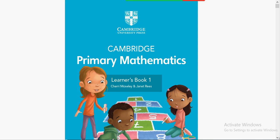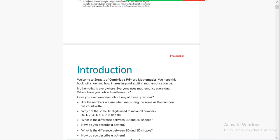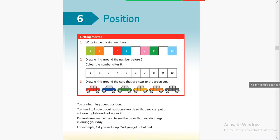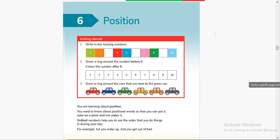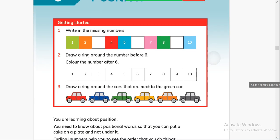Bismillahirrahmanirrahim and assalamu alaikum. This is Cambridge Primary Mathematics Learner's Book for Grade One. In my previous videos we have done chapters one through five. Today we will directly start from Unit Six, and it is about positions.